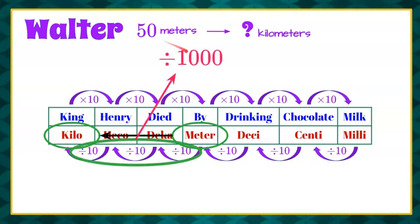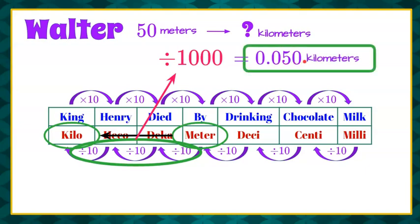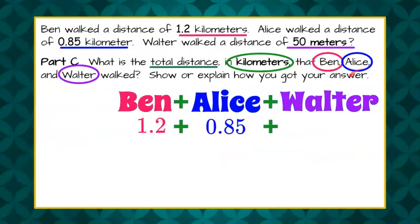So when we do 50 divided by a thousand, I'm taking the decimal point that's invisible and right here, and I'm going three decimal places to the left. It's getting smaller by three digits. So I need to add a zero here. So here it was right here, one, two, three. So we know that it's 0.05 or five hundredths of a kilometer. So now we can go back to our part C and add that in here. And we know that Walter walked five hundredths or 0.05 kilometers.